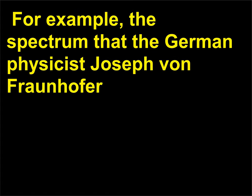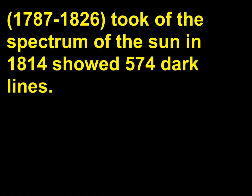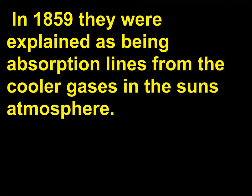For example, the spectrum that the German physicist Joseph von Fraunhofer (1787–1826) took of the sun in 1814 showed 574 dark lines. In 1859 they were explained as being absorption lines from the cooler gases in the sun's atmosphere.